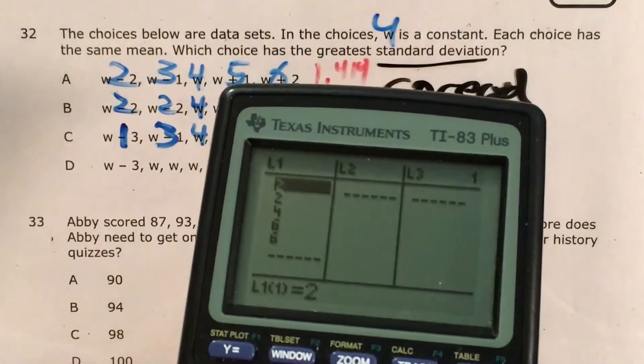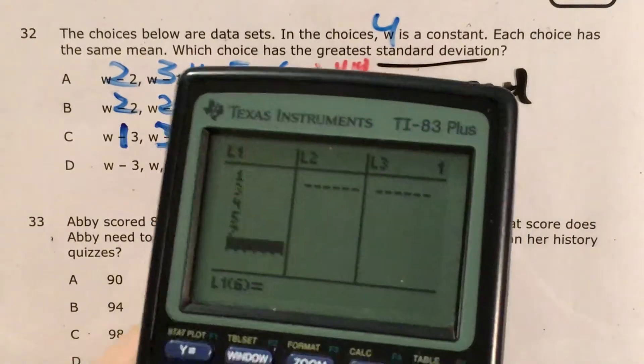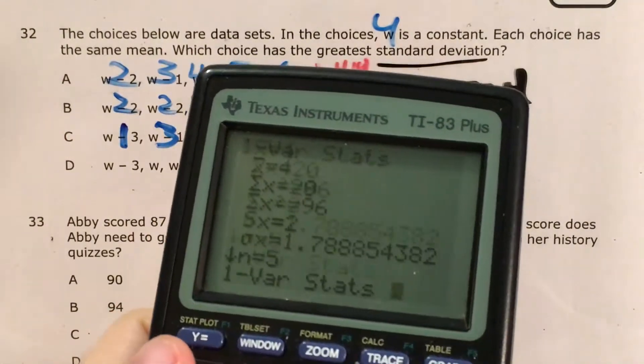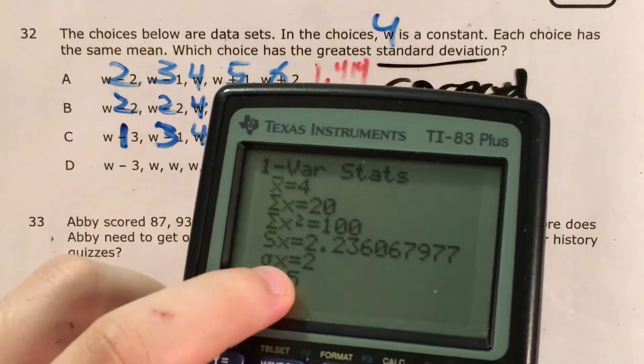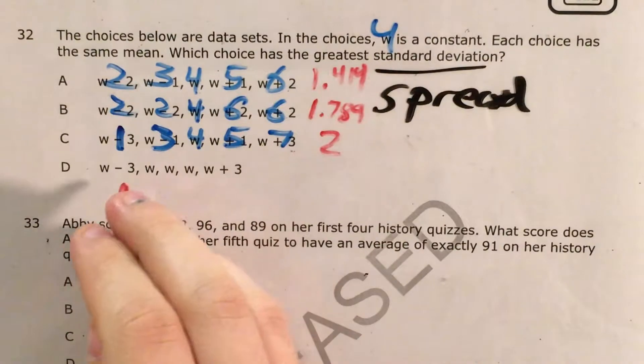Stat, edit, change my data. 1, 3, 4, 5, 7. Stat, calc, one variable stats. Press enter again, and my standard deviation is exactly 2.